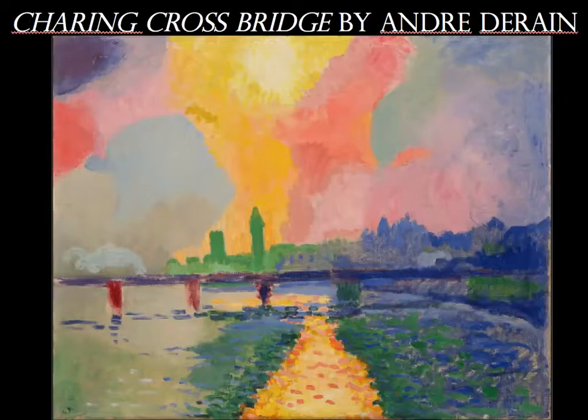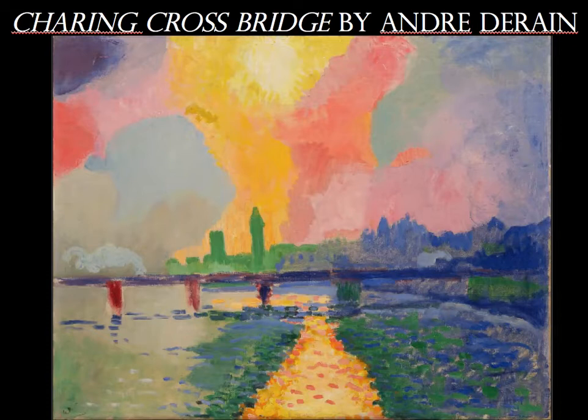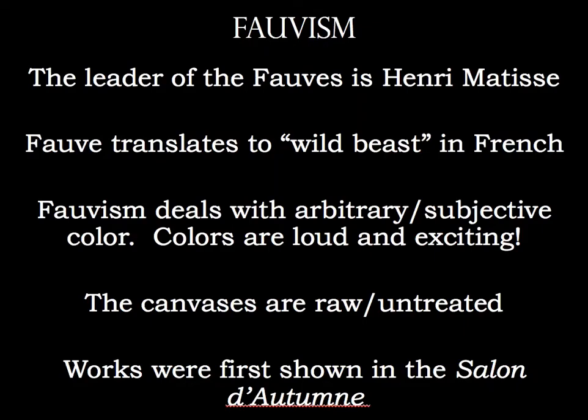The time we really see Fauvism prevalent is from 1903 to about 1908. This is an example of a Fauvist painting — you can see how bright and colorful it is, how exciting it is, and most importantly the use of arbitrary color, meaning the colors really aren't correct. The leader of the Fauves is Henri Matisse, one of the most important artists of the 20th century. The name Fauve comes from the translation of Wild Beast.